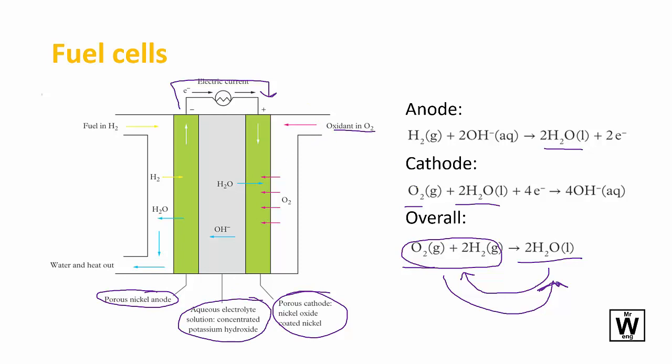The oxygen is going in as we see here, combining with the water. As the equation says, the hydroxide is coming out. If you look up here, the hydrogen then combines with the hydroxide to produce water.